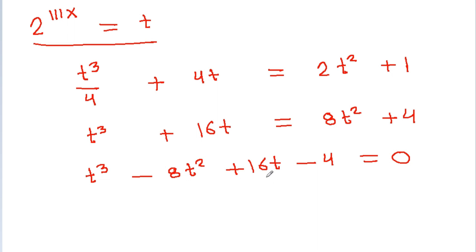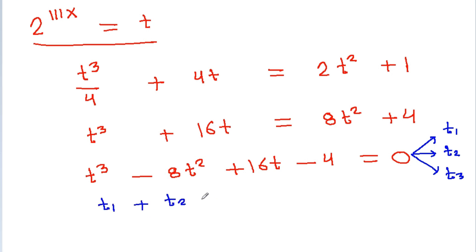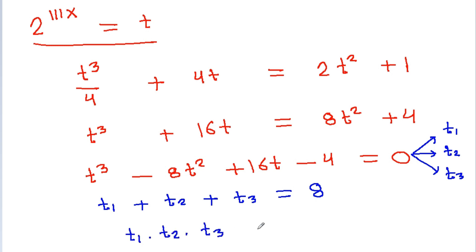Suppose the roots of this equation are t1, t2, and t3. Then by Vieta's formulas, t1 plus t2 plus t3 will be equal to 8. But we have to find the sum of all values of x, so we also use t1 times t2 times t3 will be equal to negative of negative 4, that is 4.